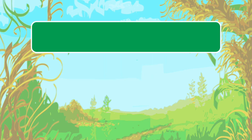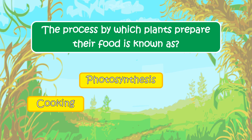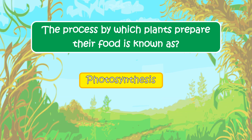The first question is: the process by which plants prepare their food is known as — the options are cooking, photosynthesis, or transpiration. The right answer is photosynthesis.